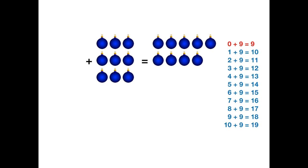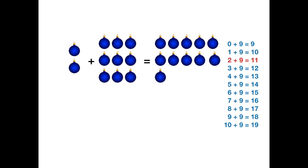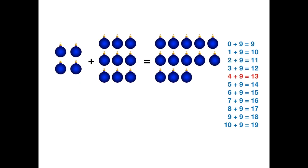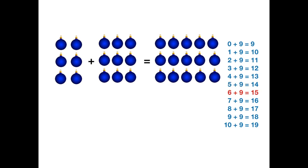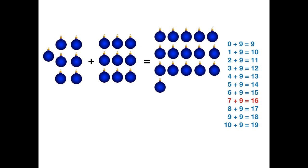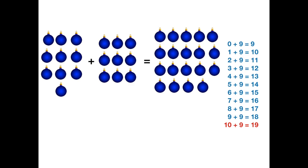Adding 9 to a number. 0 plus 9 equals 9. 1 plus 9 equals 10. 2 plus 9 equals 11. 3 plus 9 equals 12. 4 plus 9 equals 13. 5 plus 9 equals 14. 6 plus 9 equals 15. 7 plus 9 equals 16. 8 plus 9 equals 17. 9 plus 9 equals 18. 10 plus 9 equals 19. And we are all done.